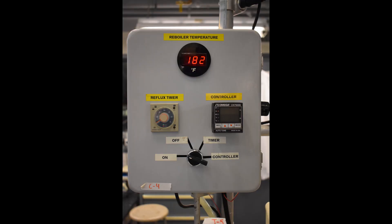Set the reflux timer to ON using the dial on C4 and allow for total reflux and all the remaining vapors to condense. Set the reflux timer to OFF once all the vapors have been condensed.